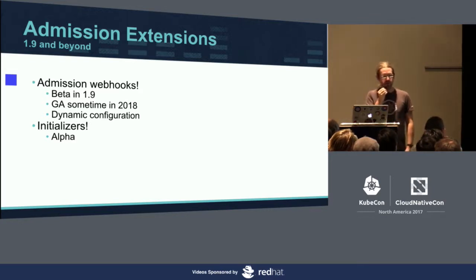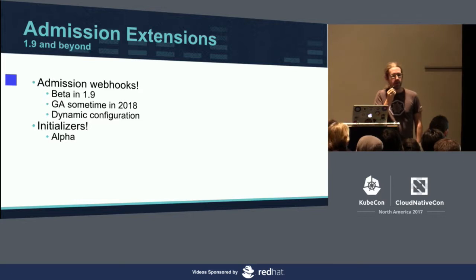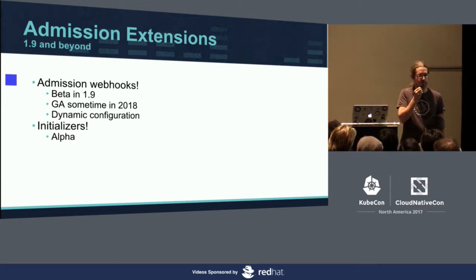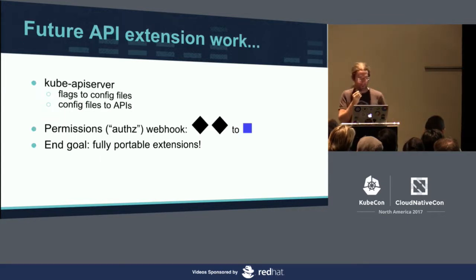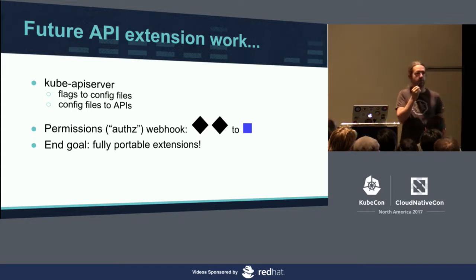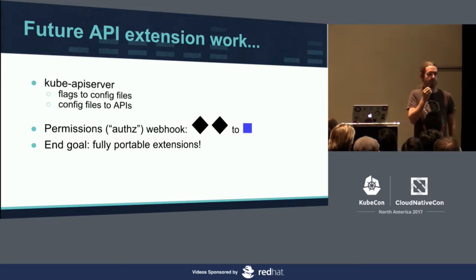Another option for a similar purpose is initializers. We've been working on both initializers and webhooks — initializers are in alpha and at some point in 2018 we expect to make a decision about whether to go all in on webhooks or if there is also a place for initializers. In 2018 I also expect to be in the business of moving flags into config files for the kube API server, and ideally moving config files into APIs where it's appropriate. I don't like the fact that to change things about the API server, you have to twiddle with flags and restart it right now. That's very inconvenient for cluster operators.